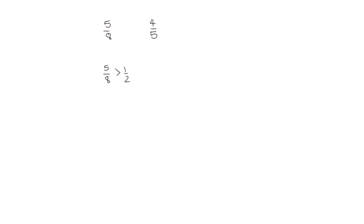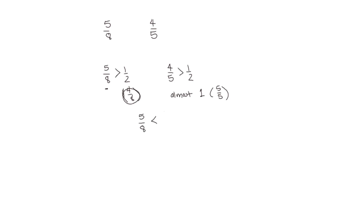Let's try one where we don't draw the number line. Let's just think about comparing five eighths and four fifths. Well, we know that five eighths is greater than one half, because one half is four eighths, but it's not a lot greater — it's pretty close to one half. On the other hand, four fifths is greater than one half, but four fifths is almost one, since that would be five fifths. So five eighths is close to one half, and four fifths is close to one, so five eighths would have to be less than four fifths.